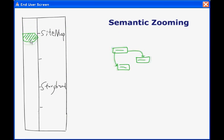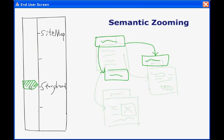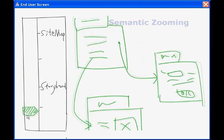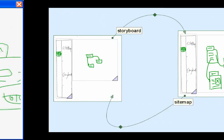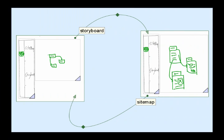Semantic zooming can be easily prototyped in Monet. In this example, a simplified view and a detailed view of content are shown on two different pages representing two zoom levels.